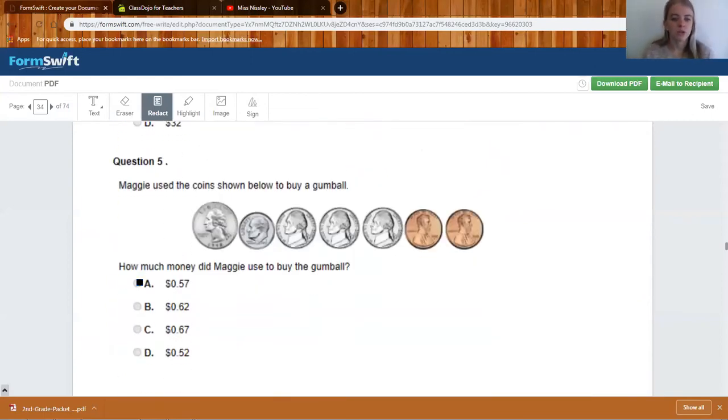Maggie used the coins below to buy a gumball. How much money did Maggie use to buy a gumball? We're just adding again. On your paper you should have written the values for each one of these coins above like we do at our math meeting paper. So here you should have written 25, 10, 5, 5, 5, 5, 1, and 1. 25 plus 10 is 35, 40, 45, 50, 51, 52. You should have marked D. 52 cents.